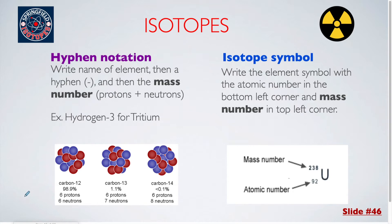For example, tritium, which had 1 proton and 2 neutrons, you would write hydrogen, a hyphen, and then 3.